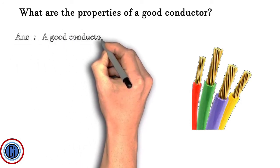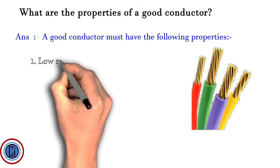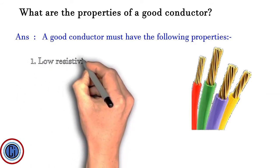What are the properties of a good conductor? A good conductor must have the following properties: 1. Low resistivity. 2. Less variation in resistance with temperature.